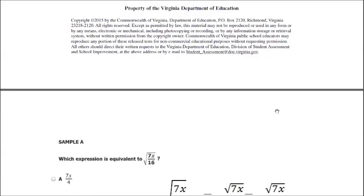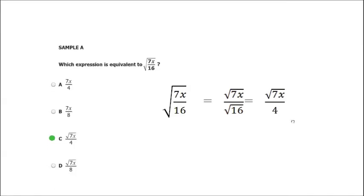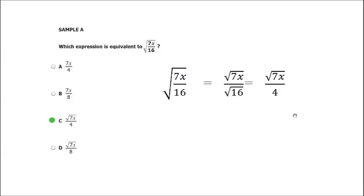We'll start with the sample questions. Sample A: which expression is equivalent to the square root of 7x over 16? If you're familiar with the laws of radicals, you know that you can take the square root of 7x over 16 and break it into two separate radicals — the square root of 7x over the square root of 16. The square root of 7x does not simplify further, but the square root of 16 is 4, leaving you with the square root of 7x over 4, which is answer choice C.